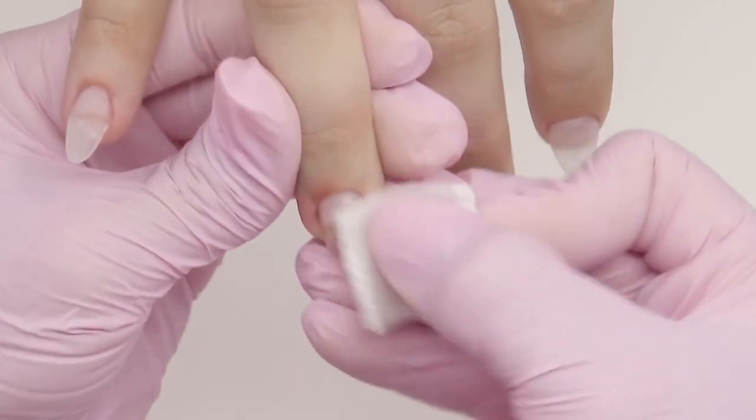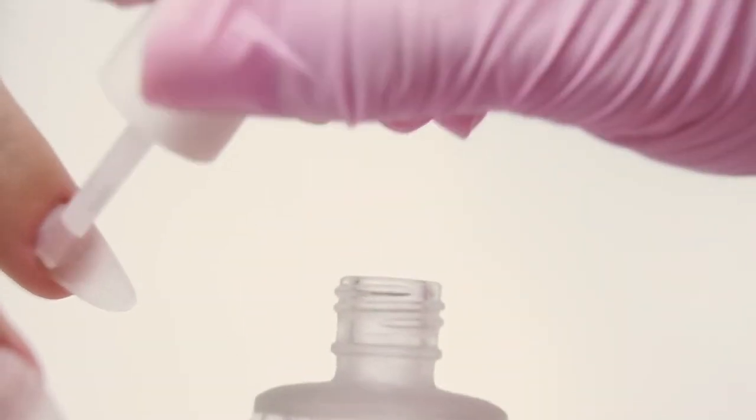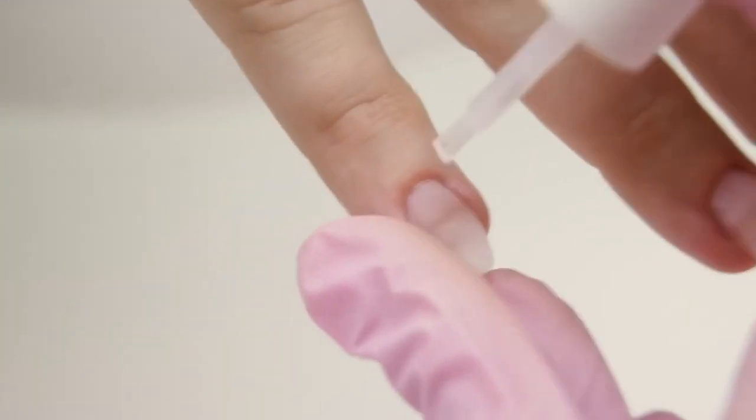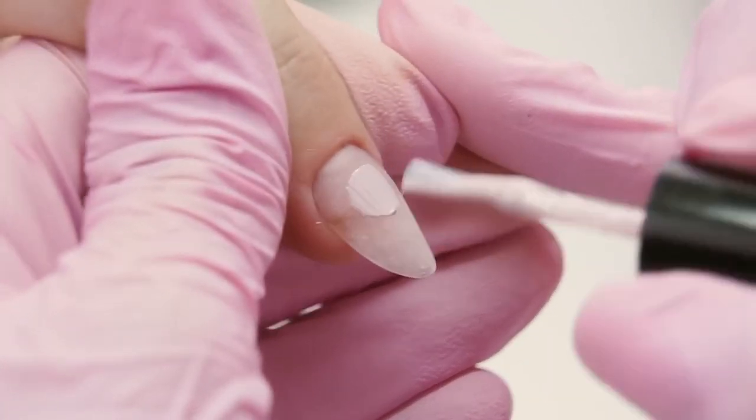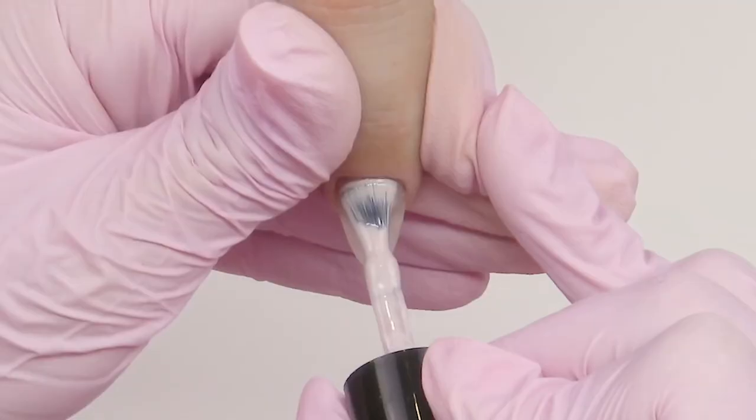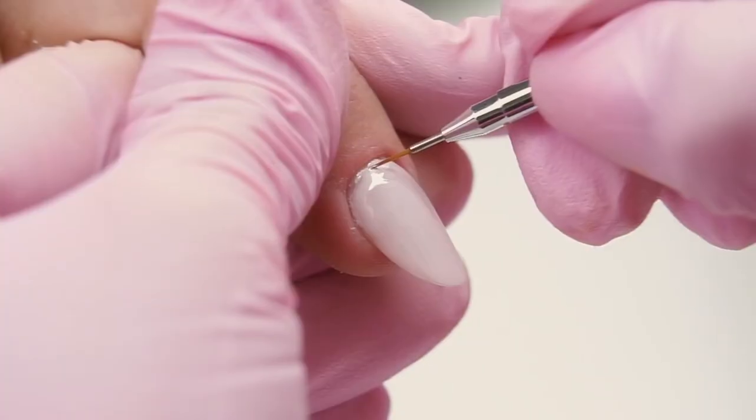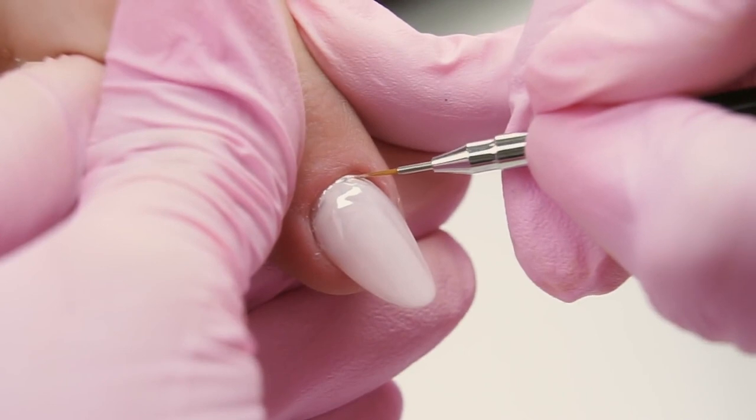Dehydrating the nail plate, removing the remaining dust. In addition, I dehydrate in the cuticle area, so that the color would not leak. We've chosen a dusty purple pink shade as the main color. I try to apply it carefully near the cuticle, without leaks. I'm using a thin brush to paint close to the cuticle. Now send in to cure.